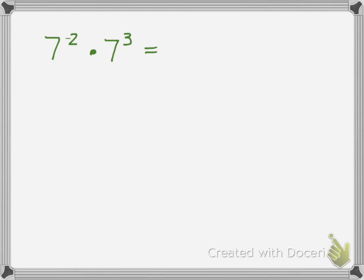Let's look a little bit more about negative exponents. I want to show you how you can be really flexible with these. Here's a problem: 7 to the negative 2 times 7 to the third. The bases are the same, so I want to combine those exponents. Using the exponent rules, I can write that as 7 to the negative 2 plus 3, because when we multiply exponential expressions with the same base, we just add the exponents. I get 7 to the first power, which is just 7.